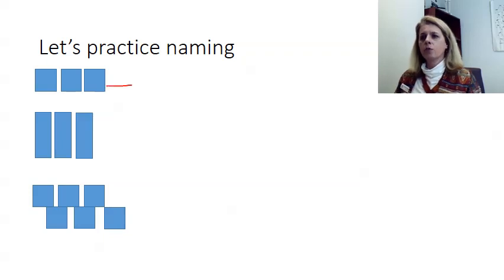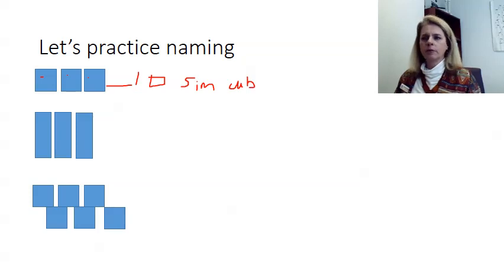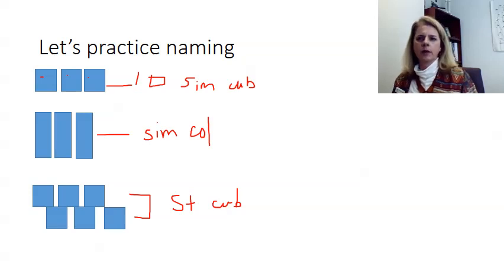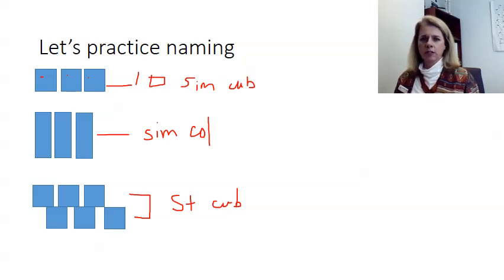Let's practice. One layer of square cells would be simple cuboidal. One layer of tall skinny cells would be simple columnar. Two layers of square cells would be stratified cuboidal. That's the way you do it, and you'll get more practice in the lab video as well. Look at the shape of the cell and how many layers there are, and that will tell you how to name the tissue.